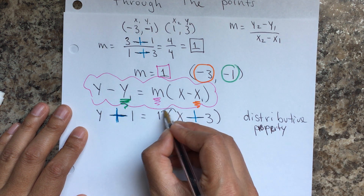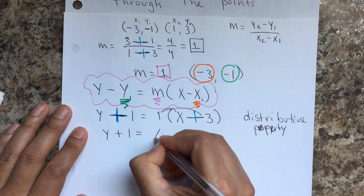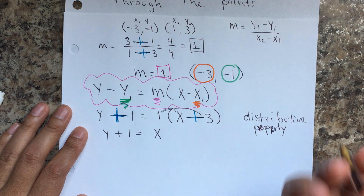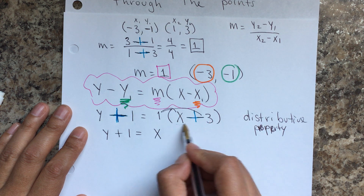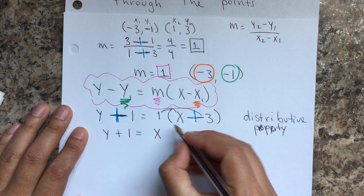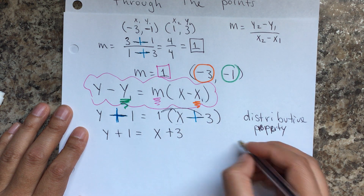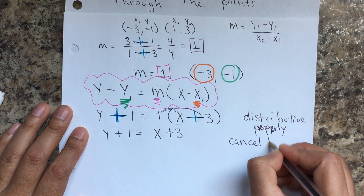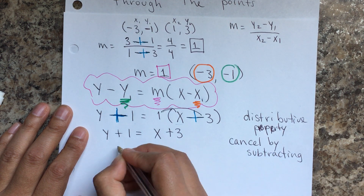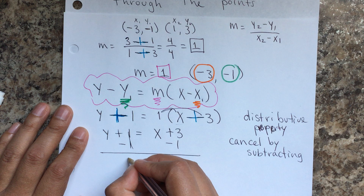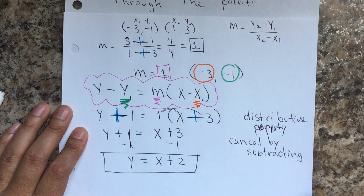Using distributive property: y plus 1 equals 1 times x — you don't need the 1 as a coefficient — plus 1 times 3 is 3. Now we cancel. The next step is to cancel by subtracting: minus 1, minus 1. And so y equals x plus 2. That is my equation.